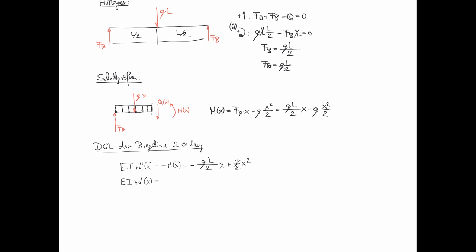Das ist also minus Q mal L halbe X plus Q halbe X Quadrat. Integrieren liefert W' von X gleich minus Q mal L Viertel X Quadrat plus Q Sechstel X der dritten plus C1. Noch einmal integrieren: minus Q L X der dritten Zwölftel plus Q 24 X der Viertel plus C1 X plus C2.